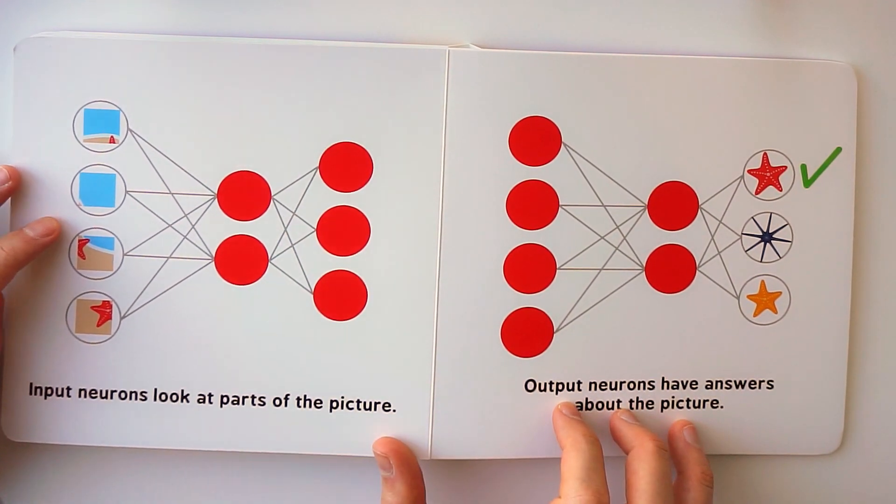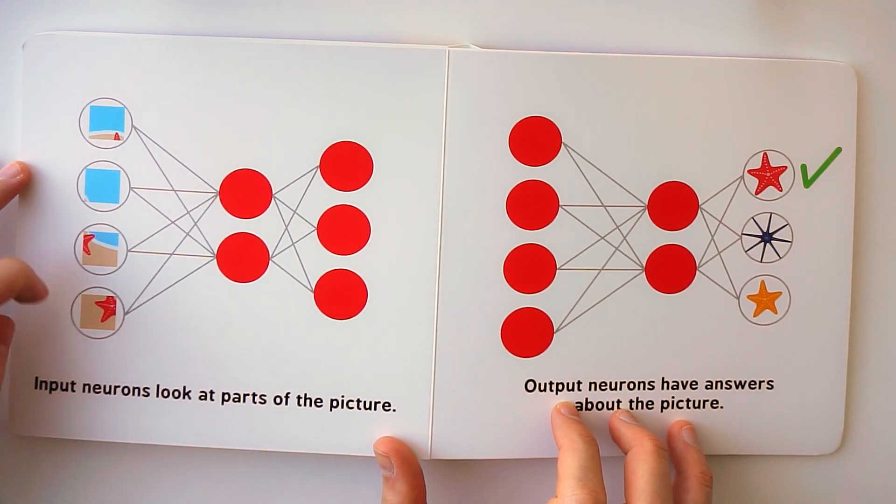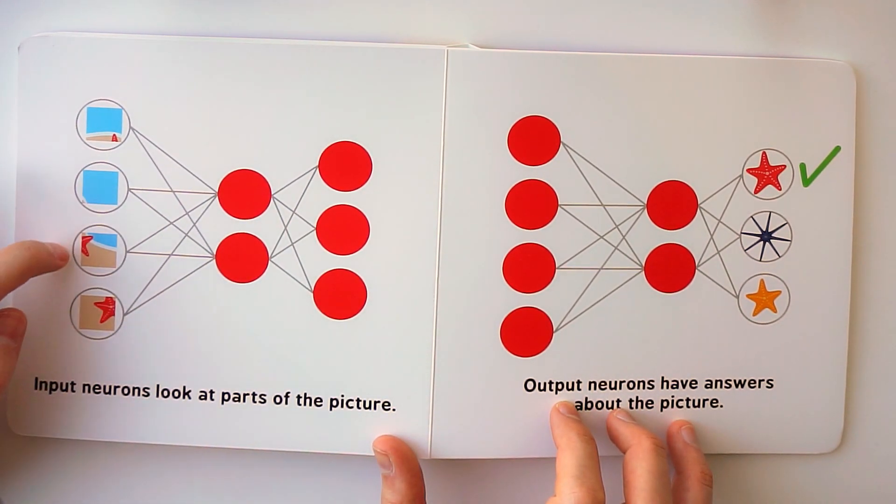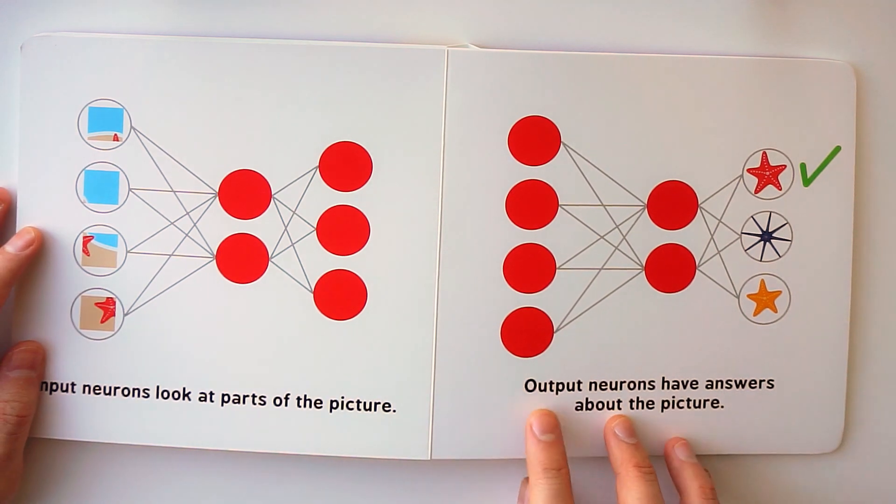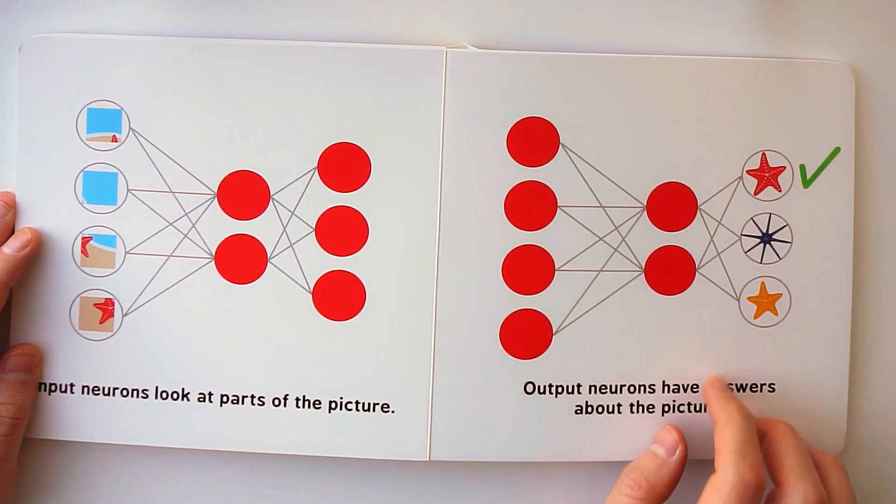Input neurons look at parts of the picture. These are the parts of the input picture. And the output neurons have answers about the picture.